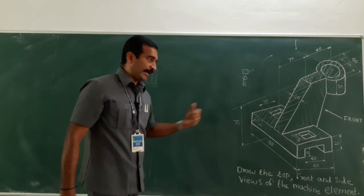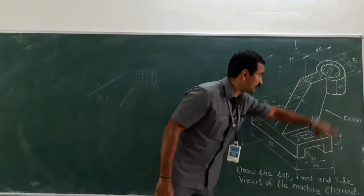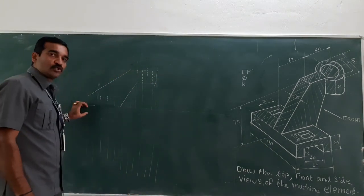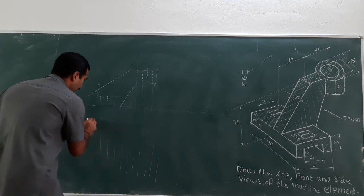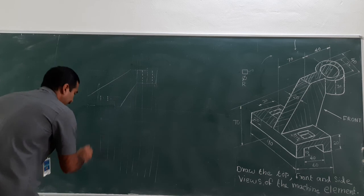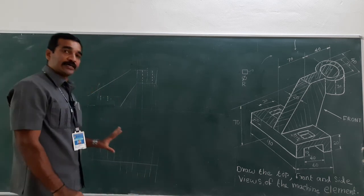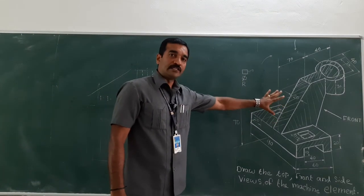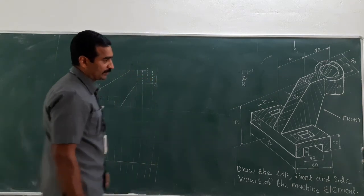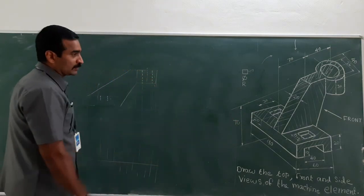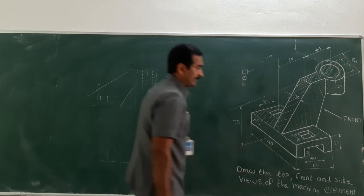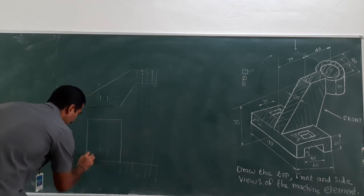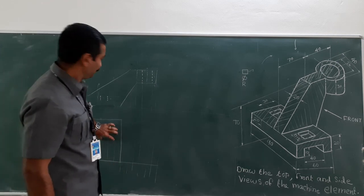Just observe how I am going to proceed for the plan or top view. I have to project all visible and invisible things to the top view. Let me project everything — visible and invisible — downward to draw the top view of this machine element. What would be the width of this object? It is 90 mm. The length is 60 and the external portion length is obtained from the front view. The width is 90, so leave 20 mm from the front view. From here it is 90. This rectangle box has been constructed and within it I will draw the plan.